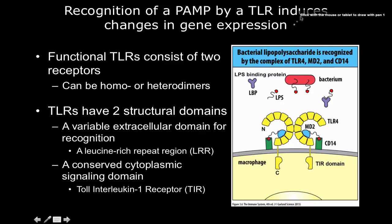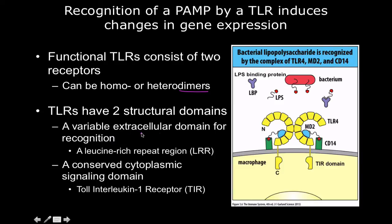For toll-like receptors, there are lots of things we can say about them, but structurally they always exist as dimers. They can be either hetero or homodimers. This is a picture of TLR4, if I'm not mistaken, and you'll notice it's two homodimers because they're both exactly the same. They have two structural domains: a variable extracellular domain for recognition, which I'm circling in magenta here. This is the area where the pathogen-associated molecular pattern is going to bind.